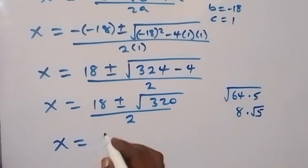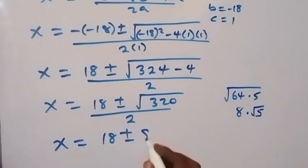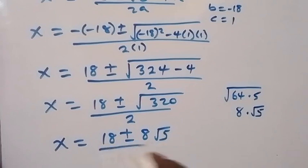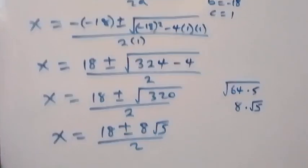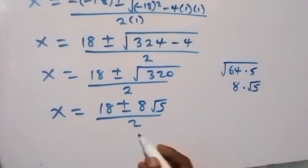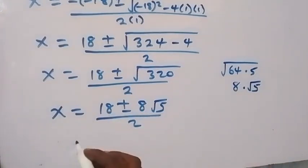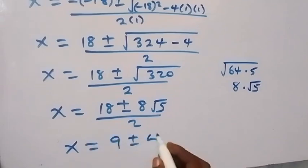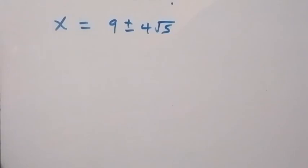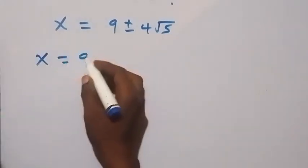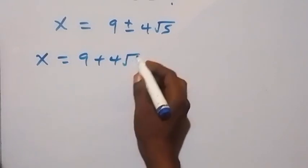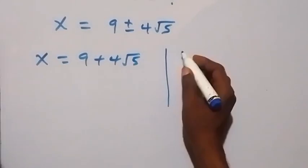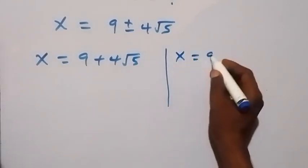So we have x equals 18 plus or minus 8 root 5, all over 2. Dividing through by 2, this becomes x equals 9 plus or minus 4 root 5. So we have two possible cases: x equals 9 plus 4 root 5, and x equals 9 minus 4 root 5.